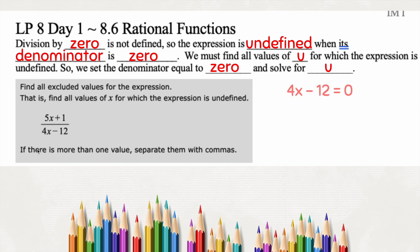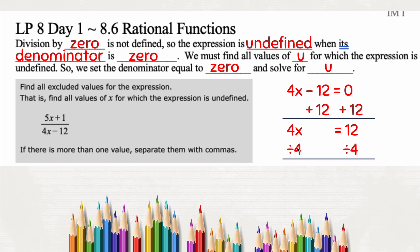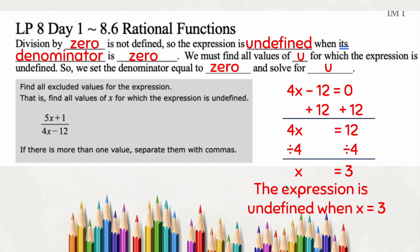We're going to find our values by taking the denominator — 4x minus 12 — and setting it equal to zero. I'm trying to get x by itself, so I'll add 12 to both sides. 4x drops down, the 12s cancel, and zero plus 12 is 12. Then I divide both sides by 4 since that's the opposite of multiplication. 4 divided by 4 cancels, giving just x, and 12 divided by 4 is 3. So the expression is undefined when x equals 3 — that's our limit; we can choose any other number but not 3.